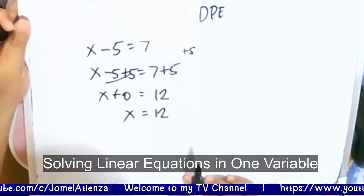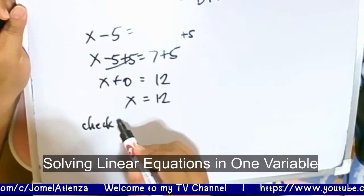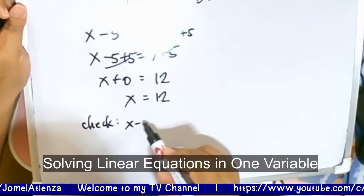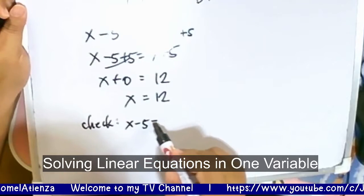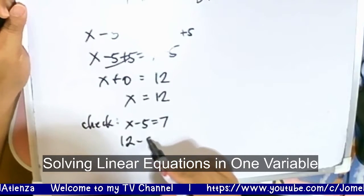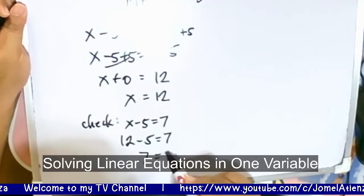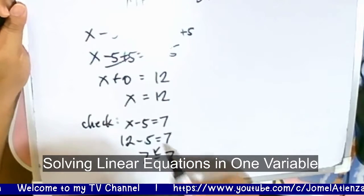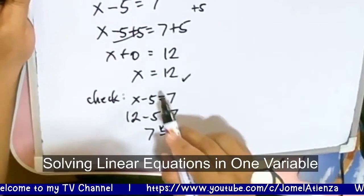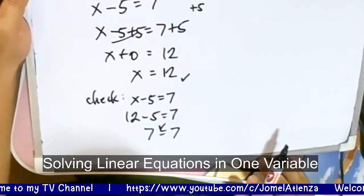So to check, using the substitution property of equality, going back to our original equation x minus 5 is equal to 7, we substitute: 12 minus 5 is equal to 7. So 7 is equal to 7 — both sides are equal. Therefore, the value of x is correct, which is the solution set.